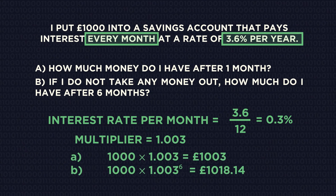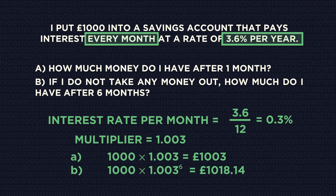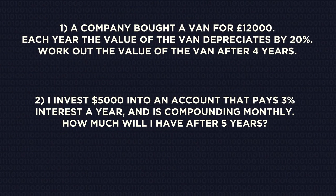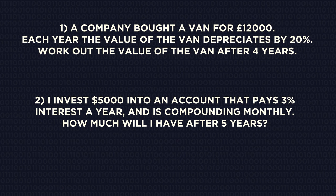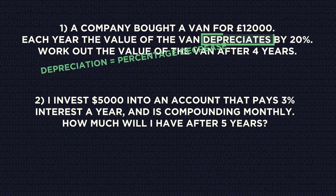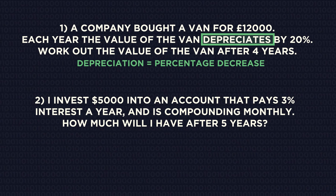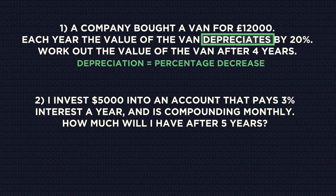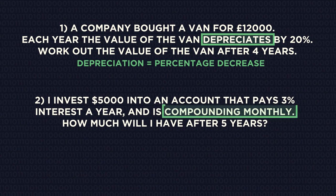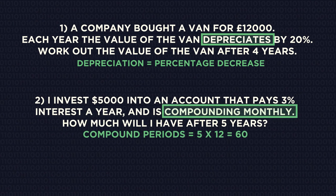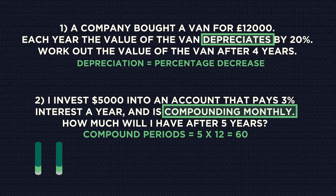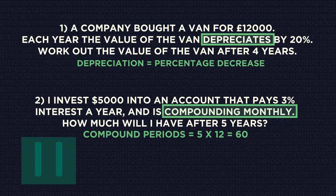How did you get on? Give these questions a go. Pay extra attention to the time periods — note that this one is a depreciation, so it's a percentage decrease. And this one compounds monthly for five years, so there are 60 compound periods. Pause the video, work them out, and click play when you're ready.